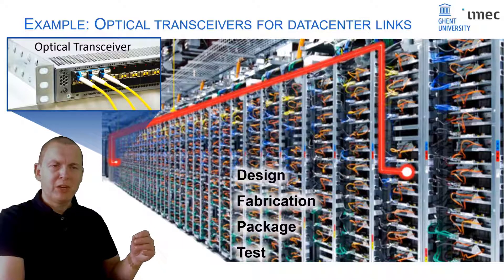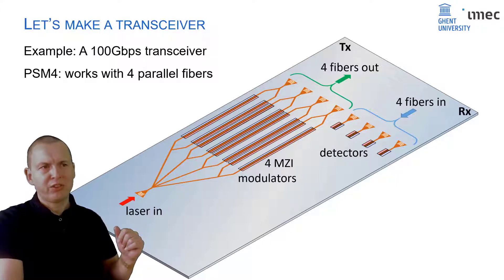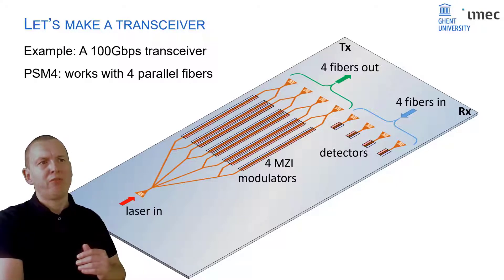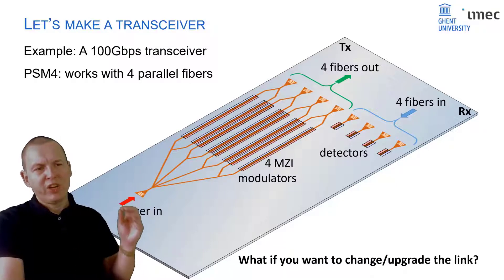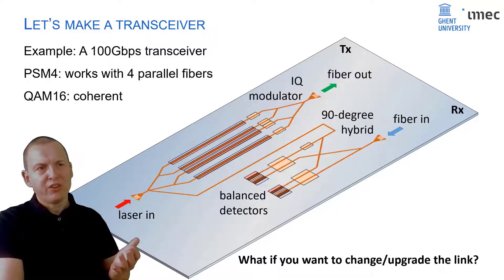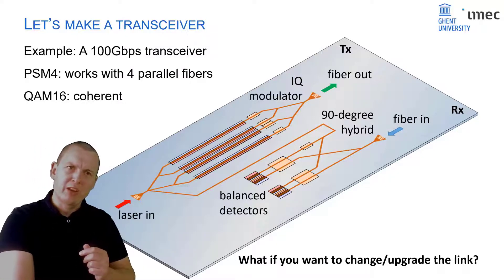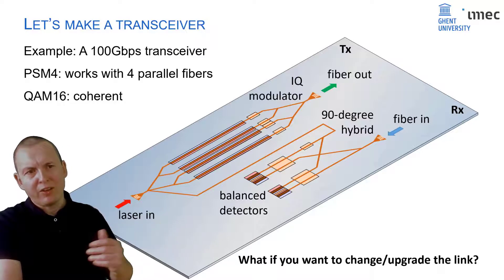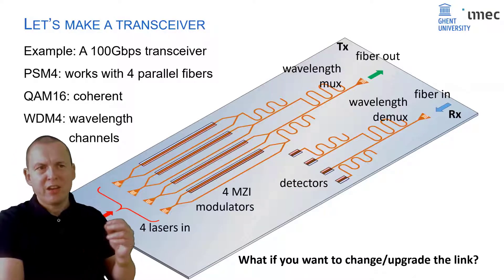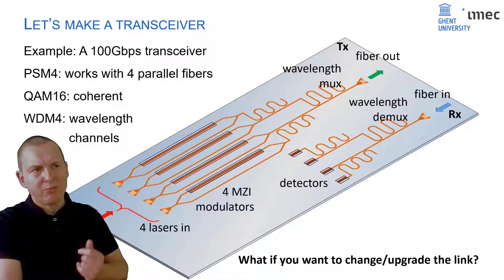For instance, if you pick a protocol consisting of four single-mode fibers, you would organize four electro-optic modulators and four detectors on the chip, connected to the fiber ports. However, if you want to change the protocol or upgrade the link to, for instance, coherent communication, you need to redesign the chip. You essentially have to take the same modulators and detectors — the same building blocks — but reconnect them in a different way. And if you want to switch protocol again to wavelength division multiplexing, you're again using the same four modulators and four detectors, but now in a different circuit where you have to integrate wavelength multiplexers and demultiplexers.